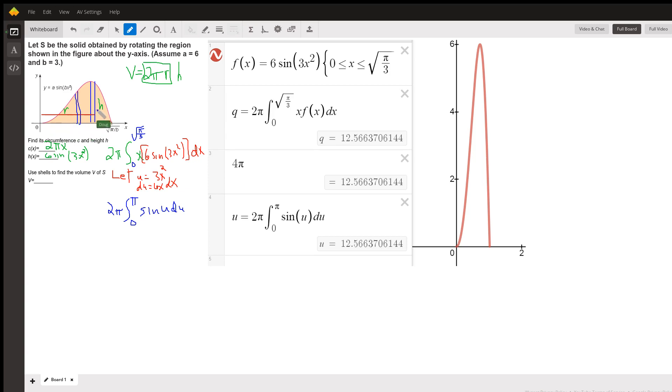So we're integrating along the x-axis from zero to the square root of π over three. This is the setup of the definite integral: 2π times the definite integral from zero to the square root of π over three times the radius. This is the typical radius from the axis of revolution to the center of the shell, which is just x, and then 6sin(3x²) will be the height of the shell.